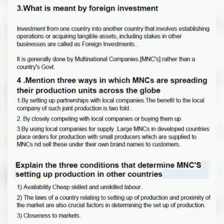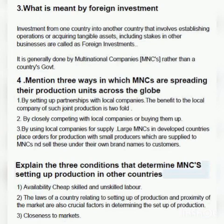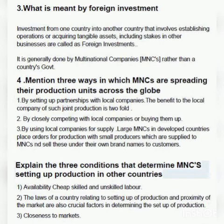Question number four: Mention three ways in which MNCs are spreading their production units across the globe. Answer: First, by setting up partnerships with local companies — the benefit to the local company of such joint production is twofold. Second, by closely competing with local companies or buying them up. Third, by using local companies for supply — large MNCs in developed countries place orders for production with small producers, which supply to MNCs, who then sell these products under their own brand names to customers.